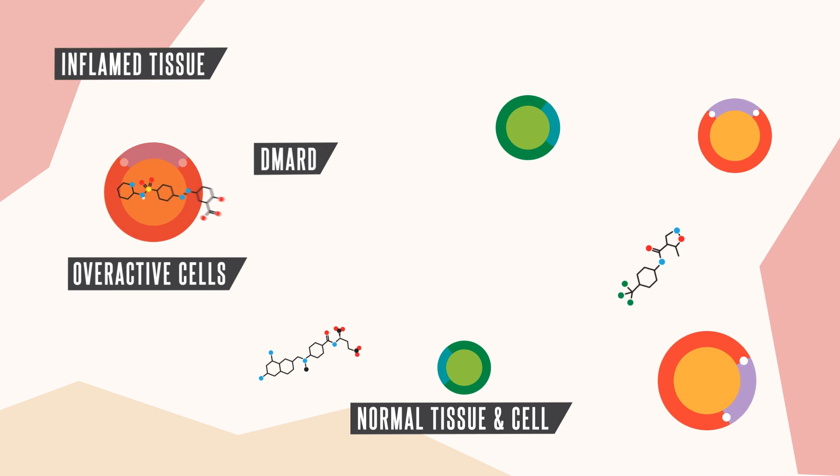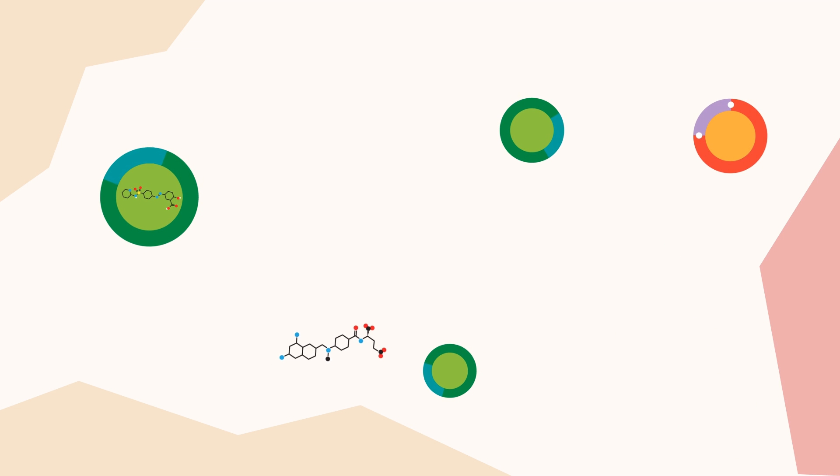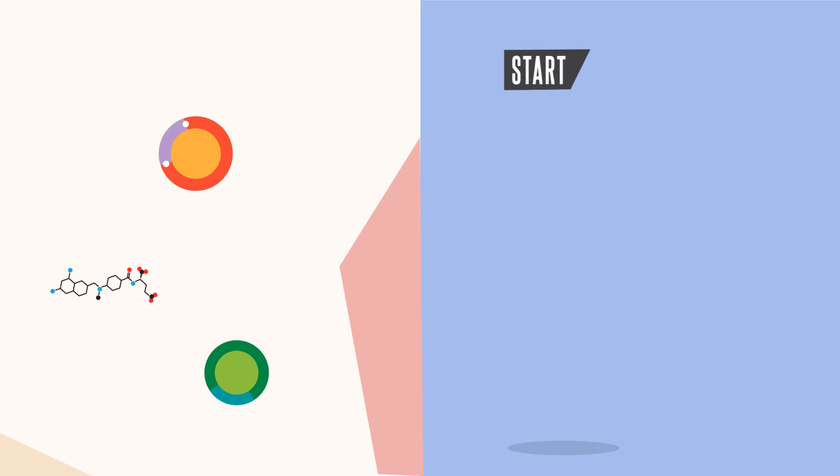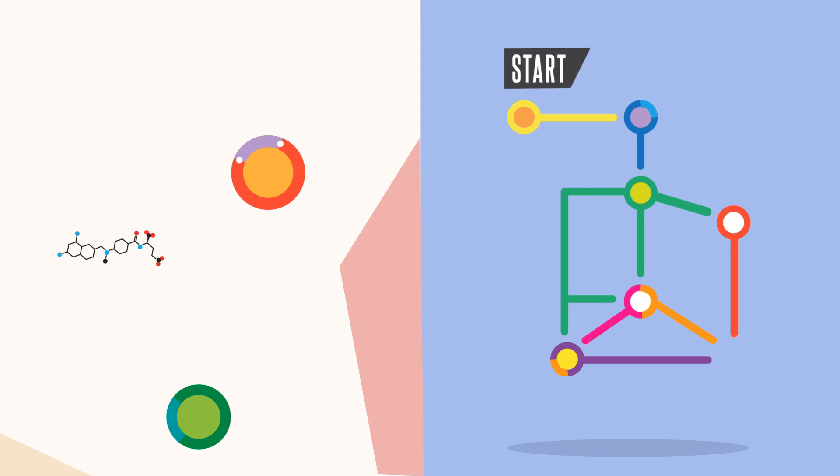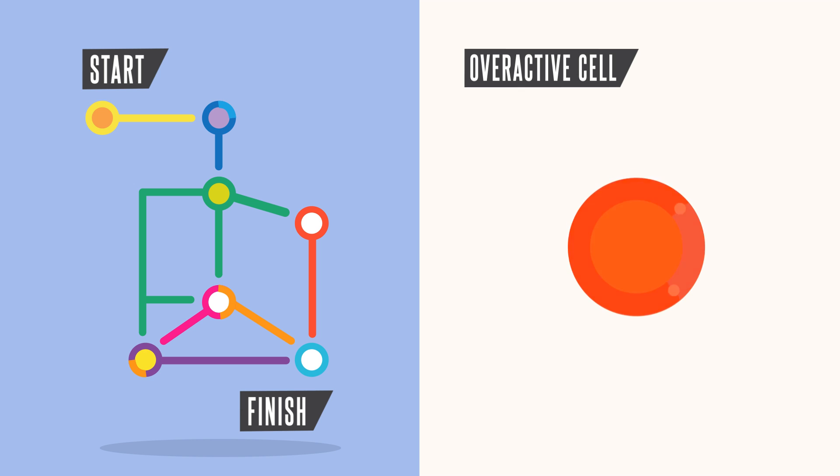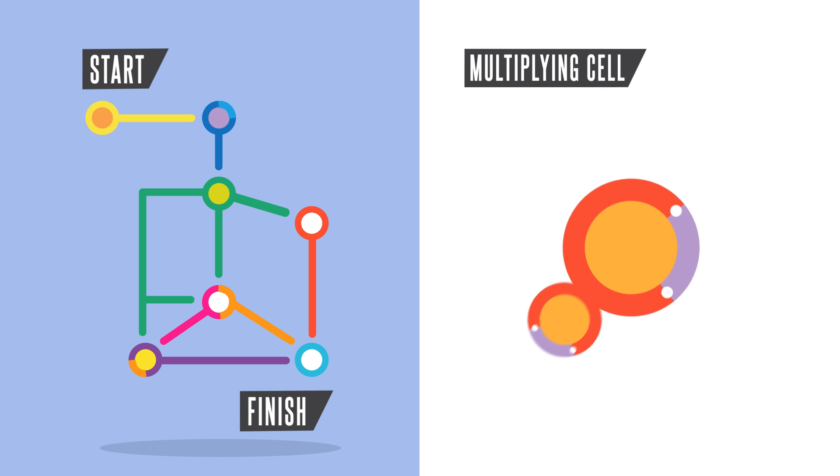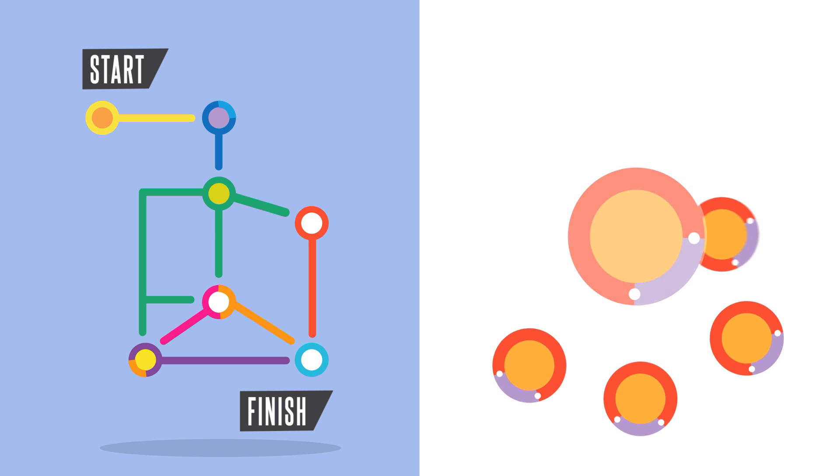We know that DMARDs are able to stop or reduce the number of overactive cells in the immune system that cause this inflammation. There are multiple pathways that DMARDs can take to control inflammation, including: one, calming or stopping cells from activating and releasing chemicals, and two, they can work by stopping overactive cells from multiplying.